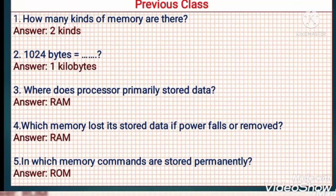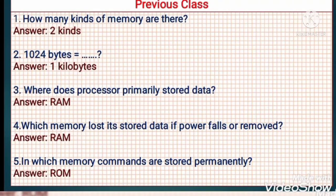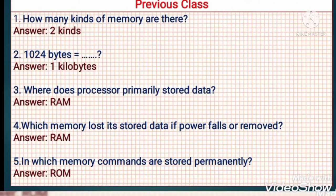Question number 3: Where does the processor primarily store data? Is it RAM or ROM? Yes, it is RAM — that is random access memory.